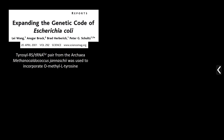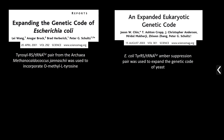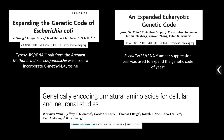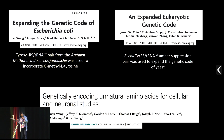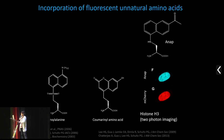Genetic code expansion — the method of incorporating unnatural amino acids in living cells — is actually more than 20 years old. The first studies incorporated unnatural amino acids in E. coli, very soon followed by incorporation in eukaryotes in yeast, and just a few years later also in primary neurons. There are really different classes of unnatural amino acids which can be used for different purposes. At the same time, there was also interest in developing fluorescent unnatural amino acids for fluorescent microscopy studies.